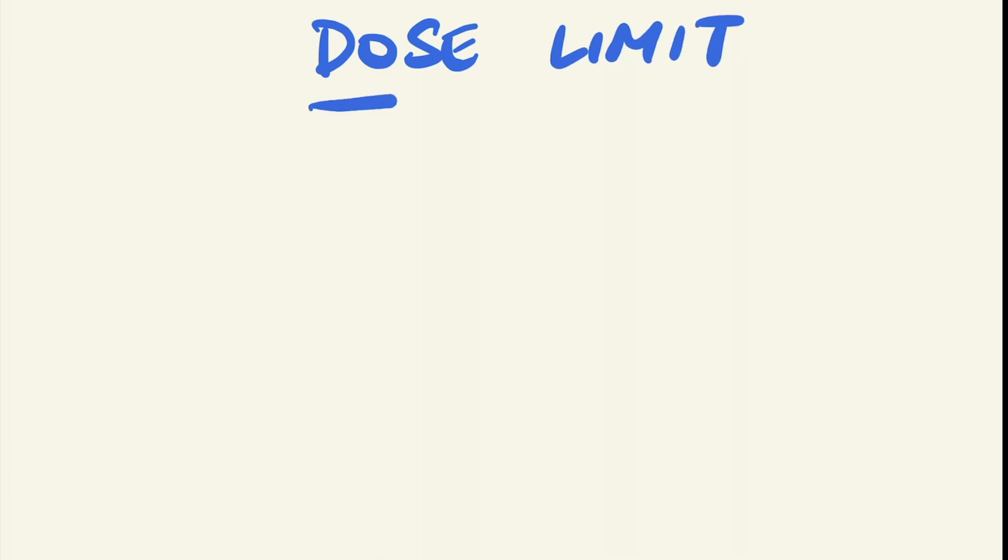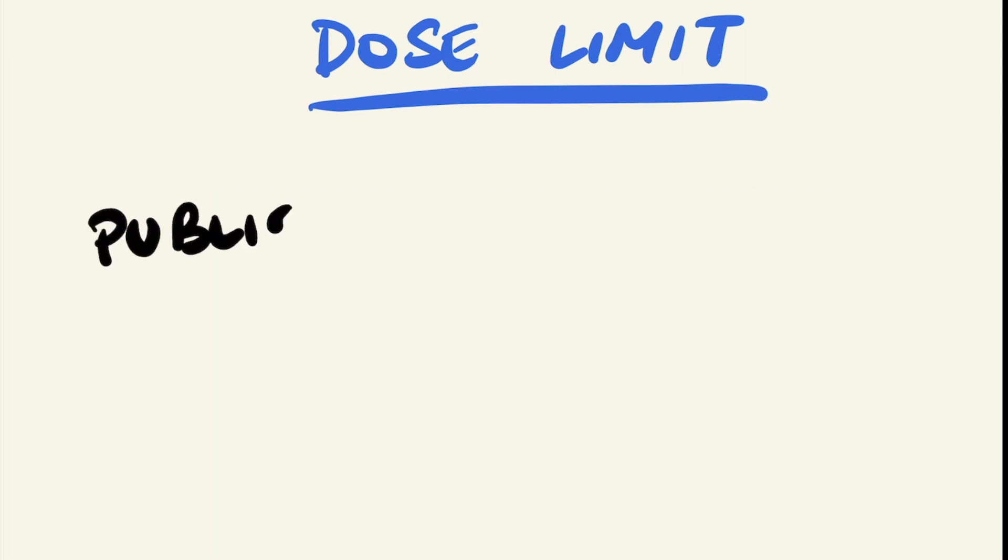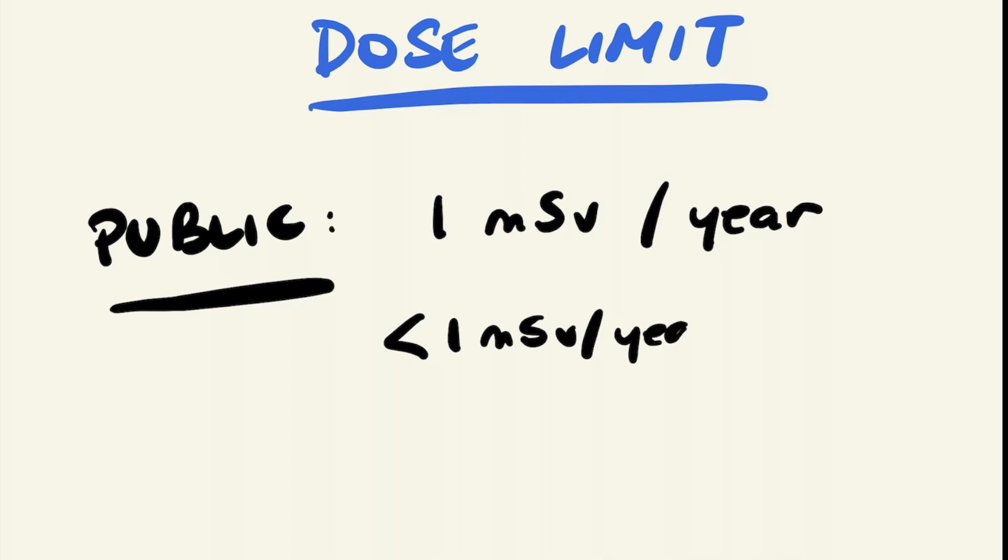The International Commission on Radiological Protection recommends effective dose limits in order to minimize the harmful effects of ionizing radiation. For members of the public, this is 1 millisievert in a year. Higher values can also be permitted if the average over 5 years is not above 1 millisievert per year.